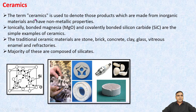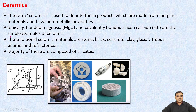The term ceramics is used to denote those products which are made from inorganic materials and have non-metallic properties. Ionically bonded Magnesia and covalently bonded Silicon Carbide are simple examples of ceramics. The traditional ceramic materials are stone, brick, concrete, clay, glass, vitreous, animal and refractories.